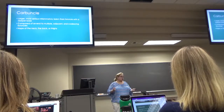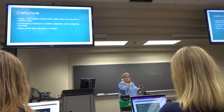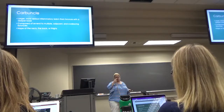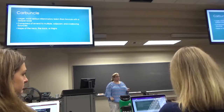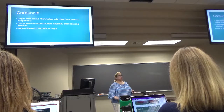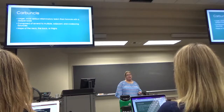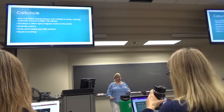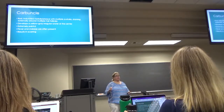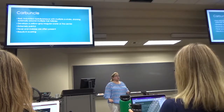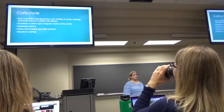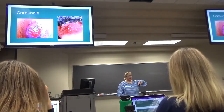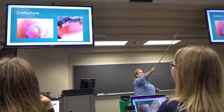A carbuncle is like a furuncle on steroids — a grouping of furuncles in the same area with multiple little openings and pustules within the same large lesion. Back of the neck, back, and thighs are common areas. It's really red, angry, and hard, sometimes becoming more fluctuant, draining around multiple hair follicles. It's very painful and you can get systemic symptoms such as fever and just feeling puny. Because this is bigger, it can result in scarring.